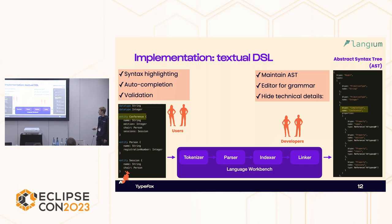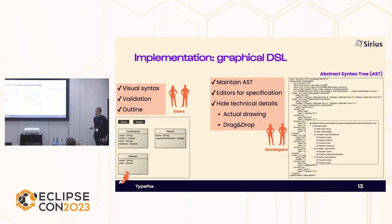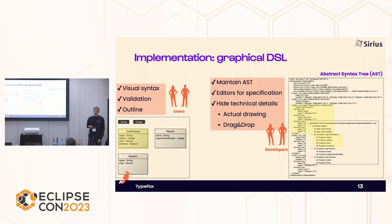For graphical DSLs, users are supported with visual syntax, validations, outlines, and other features so they can model diagrams. We as developers get an abstract syntax tree representing the conference — in EMF format with a tree or XMI visualization. The workbench maintains the AST for us. You don't need to implement drag and drop by yourself — it's much more fun to reuse it from the language workbench.